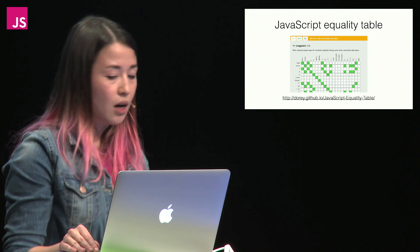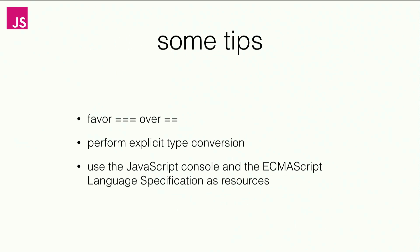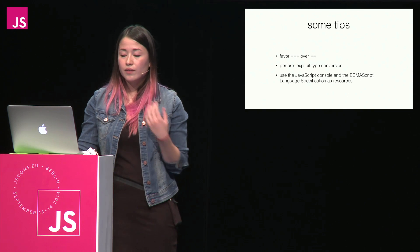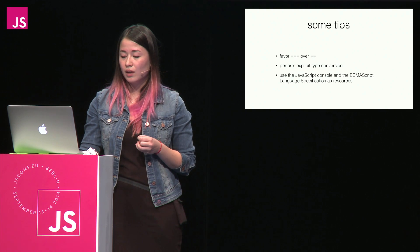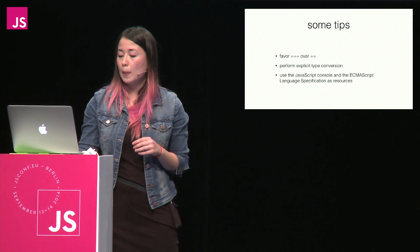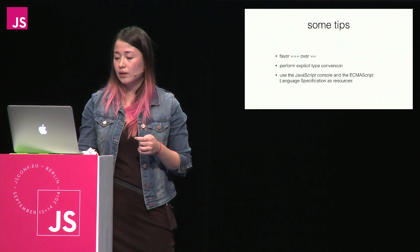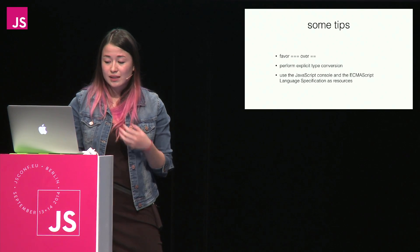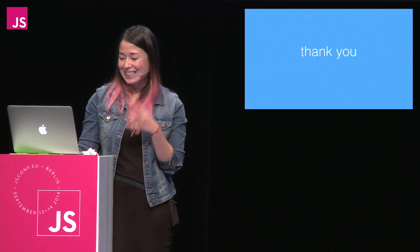One neat tool I came across while preparing for this talk was the JavaScript equality table. It graphically displays the results of comparisons using the double equals and triple equals operators — green means the expression evaluated to true, white means false. In conclusion, a few tips: try to favor the triple equals operator over the double equals operator, as it can be dangerous if you're not sure what you're doing. Try to perform explicit type conversion when able, such as calling parseInt or toString. And use the JavaScript console and the ECMAScript language specifications as resources — the spec goes into this in depth and is surprisingly not too terrible a read. Thanks!